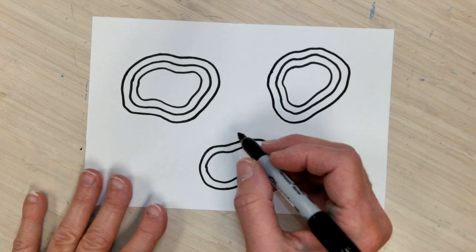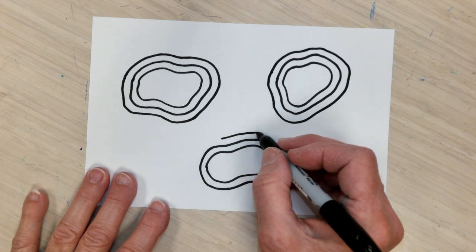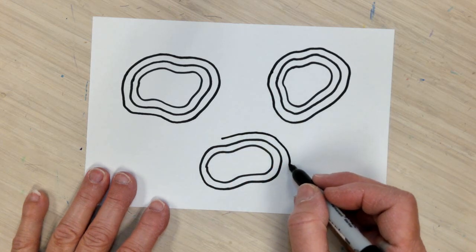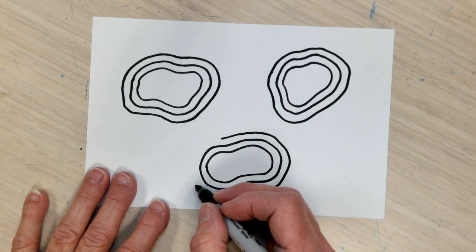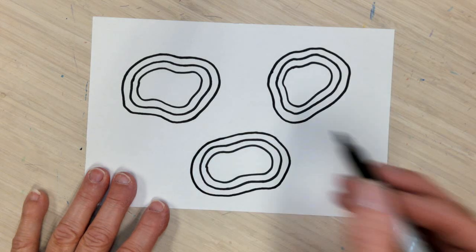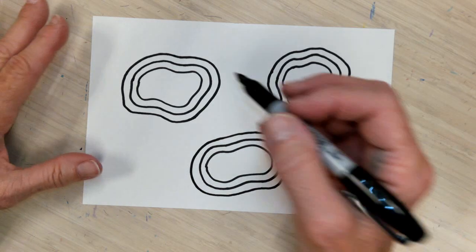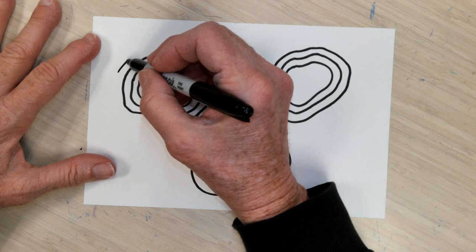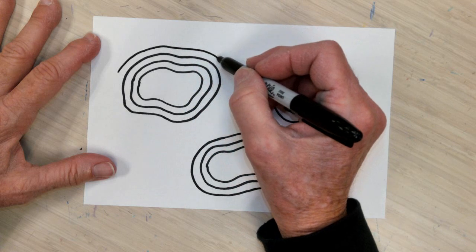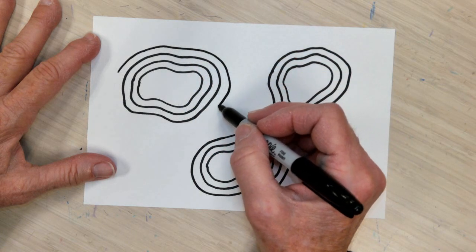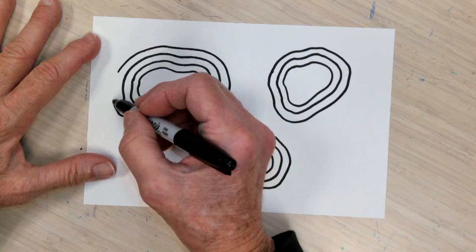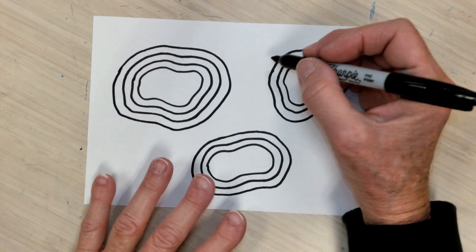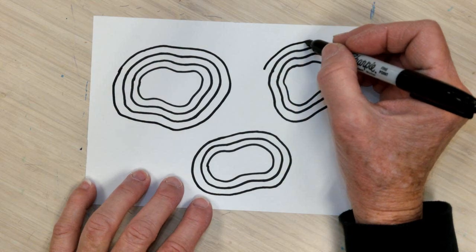Now normally I would do this in pencil with my students, but I find that the Sharpie does show up a lot better in videos. So you just keep going around and around. And this is typically a lesson that I do before I go any further into our Japanese art studies, where we go on to make landscapes.